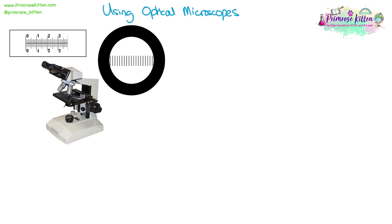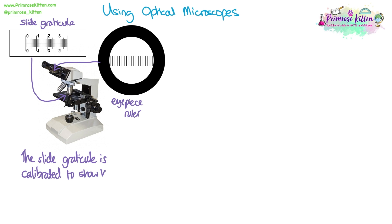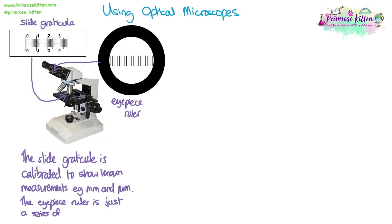There are two pieces of equipment we can use to actually measure structures in a microscope. The slide graticule is a lined ruler on a microscope slide that you place on the stage — it is calibrated and shows known measurements including millimetres and micrometres. The eyepiece ruler is a series of lines scratched into or laid onto the eyepiece lens, allowing you to lay it over structures and measure them as a scale. We call these lines eyepiece units, or EPU for short.